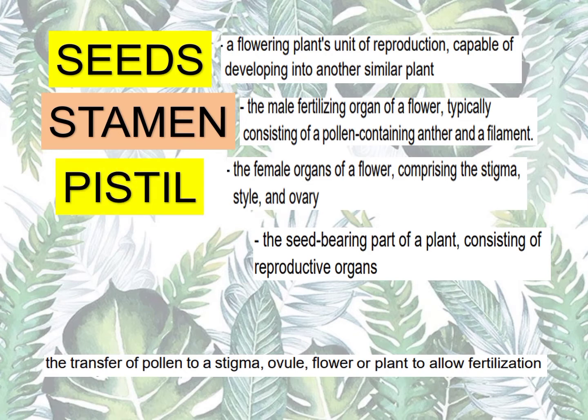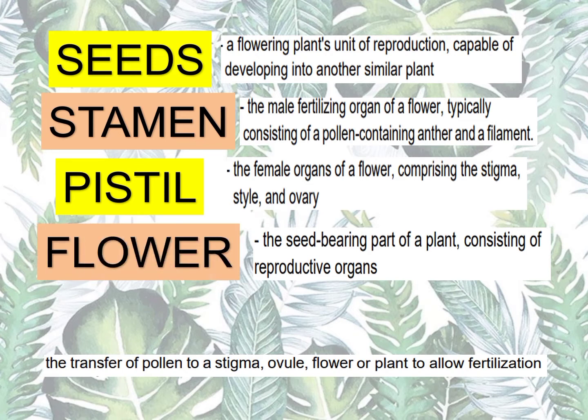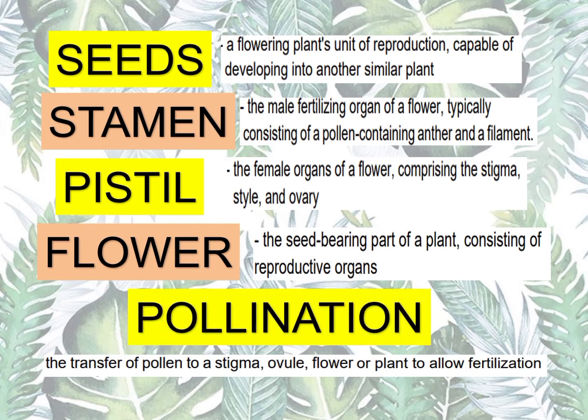The seed-bearing part of a plant consisting of reproductive organs — that's the flower. The transfer of pollen to a stigma, ovule, flower, or plant to allow fertilization — that's pollination.